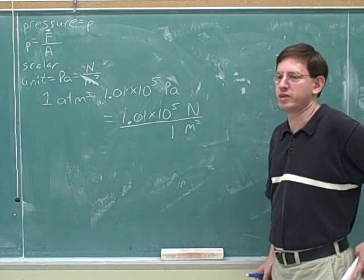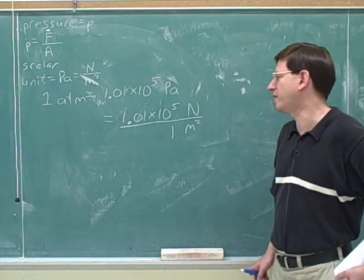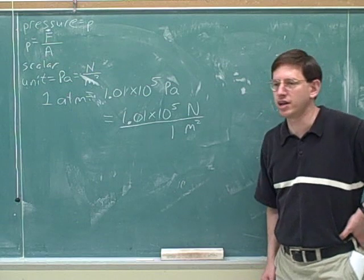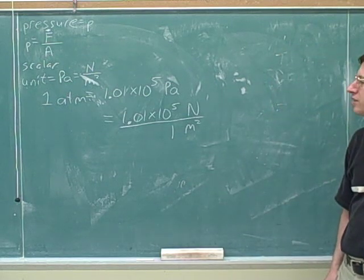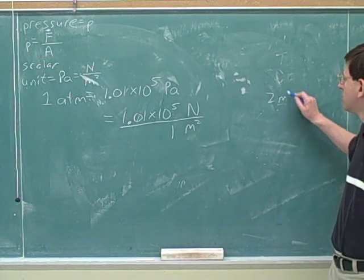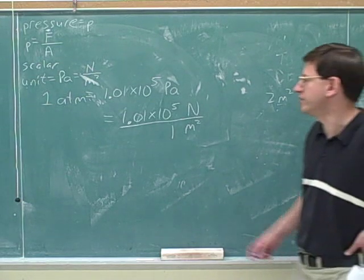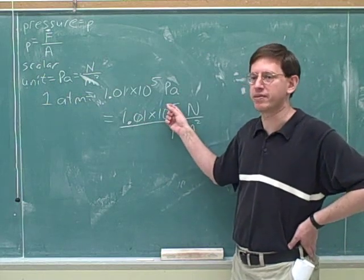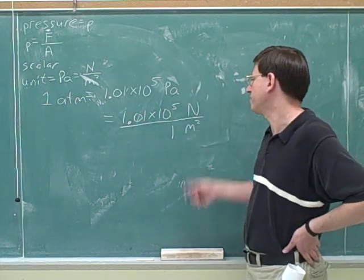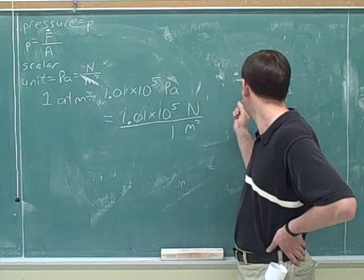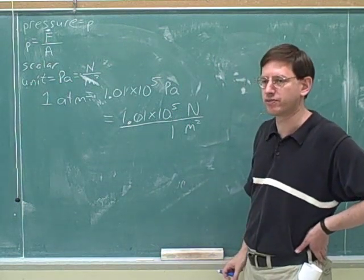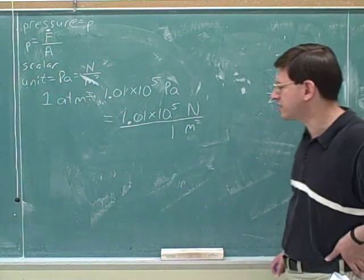Suppose that I drew a two square meter box. If I drew a two square meter box, what would be the force of the atmosphere on that box? It would be double. Yeah, it would be double. That would be 2.02 times 10 to the fifth newtons. If one square meter feels this much force, then twice as much area should feel twice as much force.